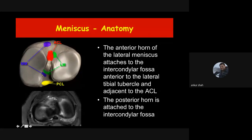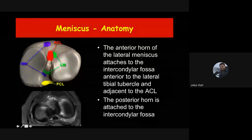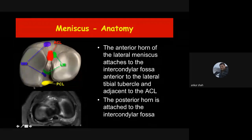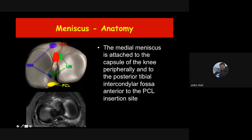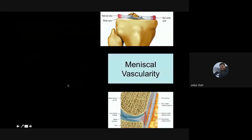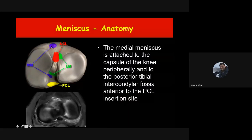Knowing where the meniscus attaches is important: if you see a posterior horn of the medial meniscus at the level of or behind the posterior cruciate ligament on sagittal images, you should suspect a tear at its posterior attachment — it should be between the lateral meniscus and the posterior cruciate ligament. The medial meniscus is also very firmly attached to the joint capsule, while the lateral meniscus is loosely attached with some gap between it and the capsule.